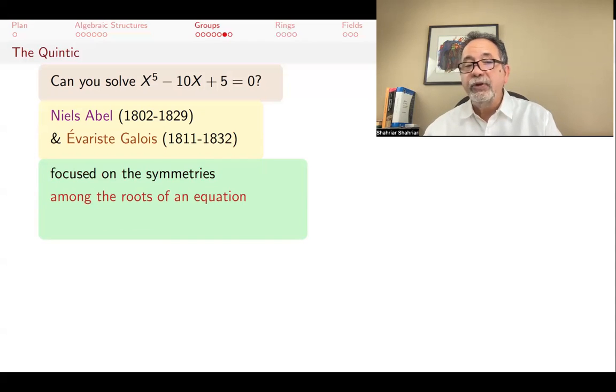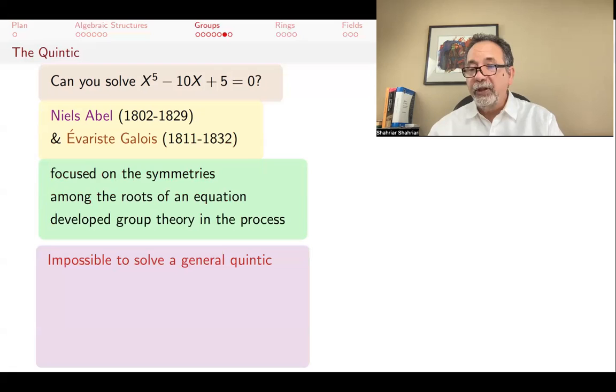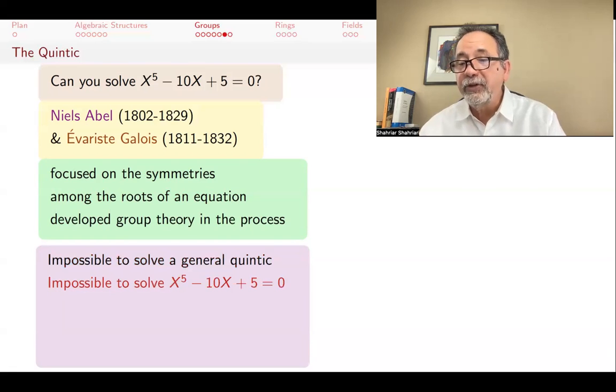In fact, you can say group theory was invented to understand the symmetries inherent among the roots of algebraic equations. What they showed, and spoiler alert, is that not only there is no general formula for solving quintics, but particular equations such that x to the fifth minus 10x plus 5 equals 0 cannot be solved using the usual algebraic techniques.